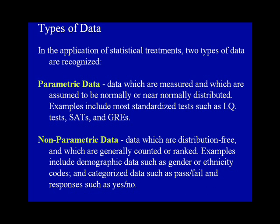Types of Data. In the application of statistical treatments, two types of data are recognized. Parametric data are data which are measured and which are assumed to be normally or near-normally distributed. Examples include most standardized tests such as IQ tests, SATs, and GREs. Nonparametric data are data which are distribution-free and which are generally counted or ranked. Examples include demographic data such as gender or ethnicity codes, and categorized data such as pass-fail and responses such as yes-no.